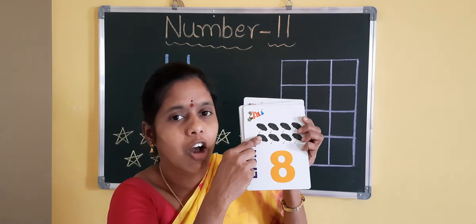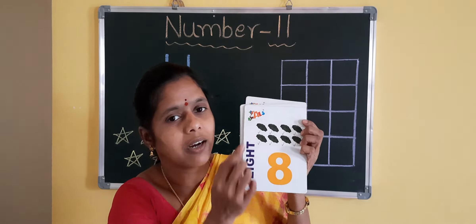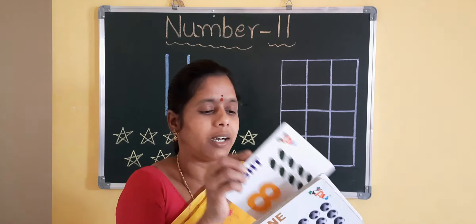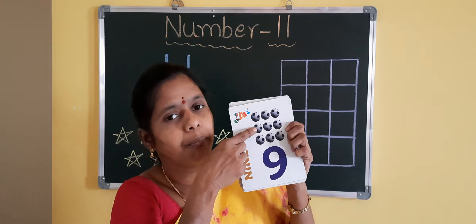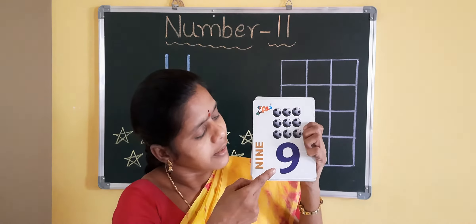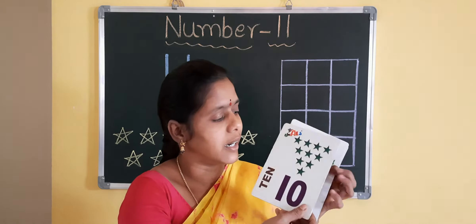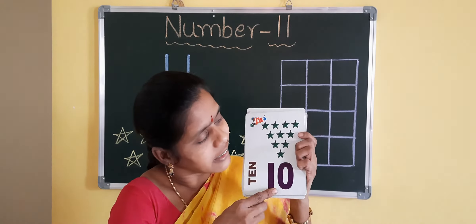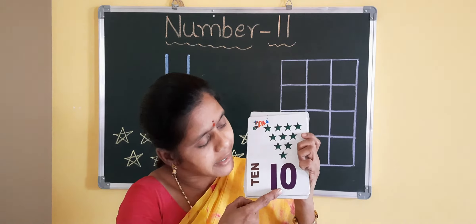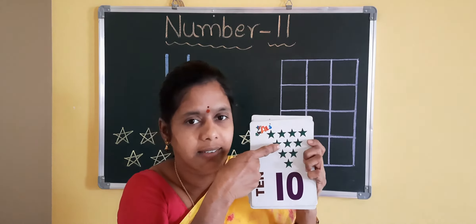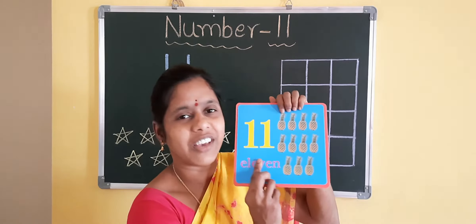7 after 8, 8 umbrellas. 9, 9 balls. 10, 10 stars. 10 after 11.